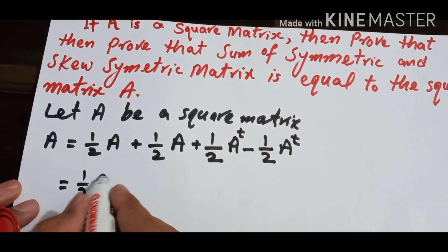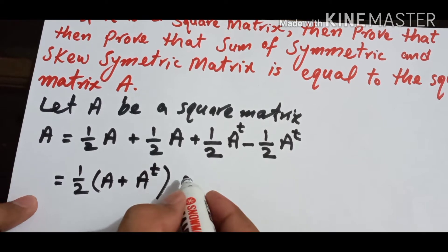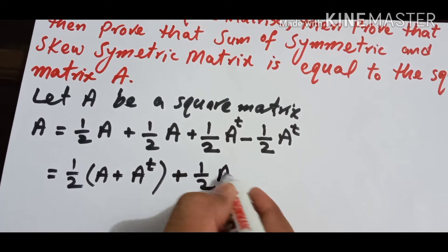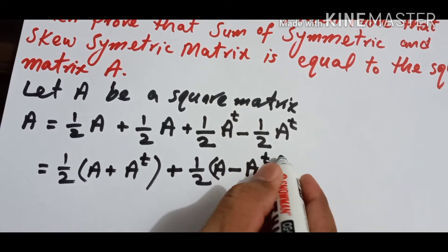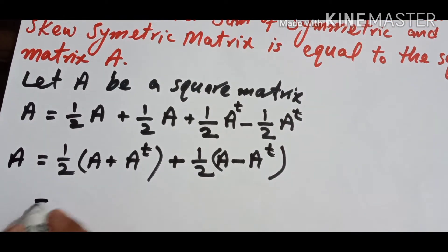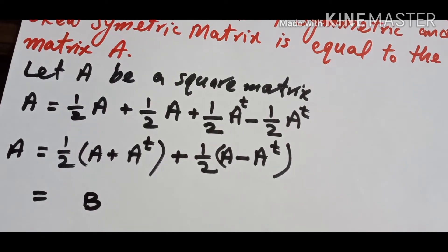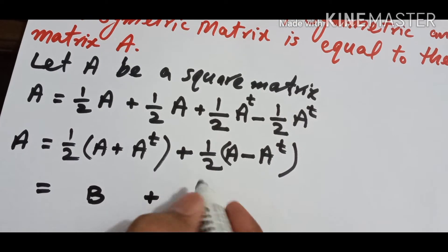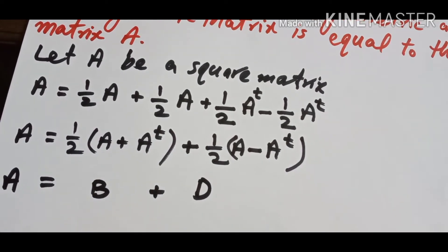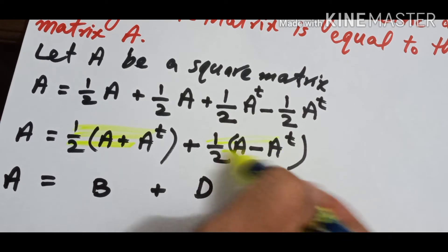We organize this as: ½(A + Aᵀ) — we take this part — and the other two values become ½(A − Aᵀ). Now here we let this first part be matrix B, and we let this second part be matrix D. So A equals B plus D.